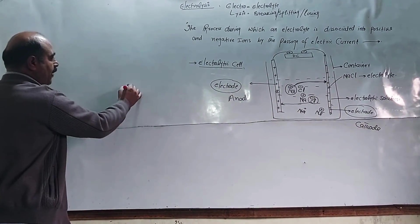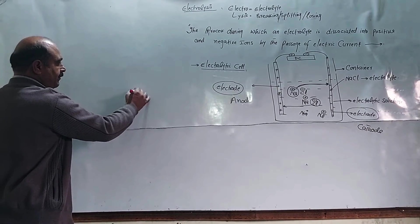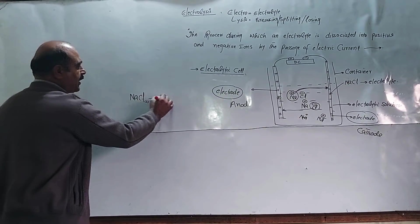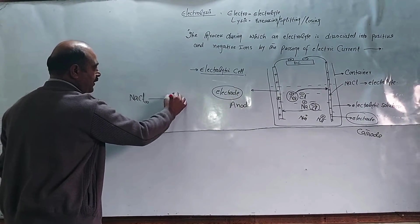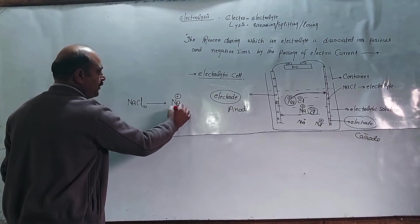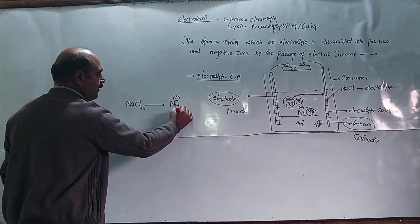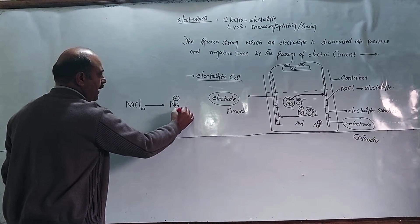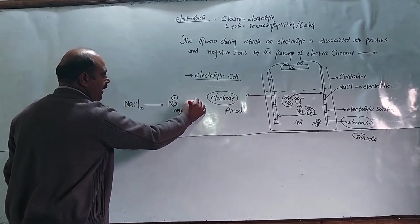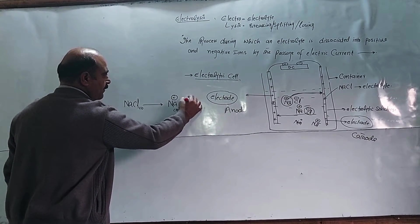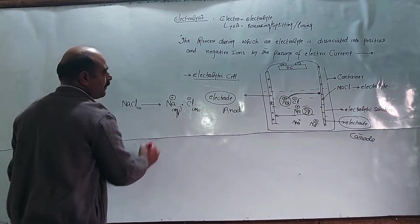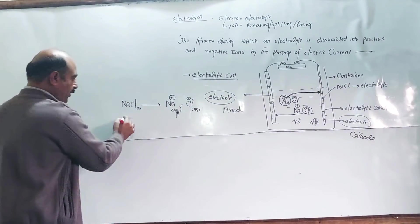Sodium chloride in solid form ionizes in water. The ionization reaction is: NaCl(s) dissolved in water gives sodium ion (Na⁺ aq) plus chloride ion (Cl⁻ aq). This is the ionization reaction.